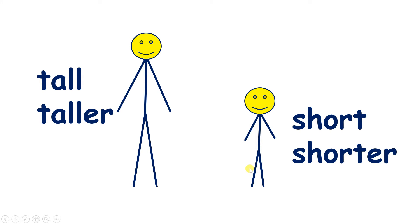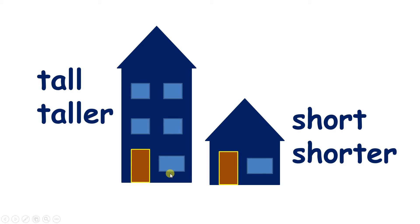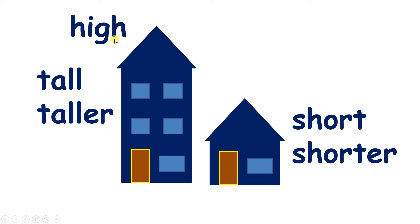But we don't only compare the height of people — we could also say that this is a tall building. And if you're at the top of this house, you could say that you're high up off the ground. And what's the opposite to high? Well, if it's not high, it's low or low down.